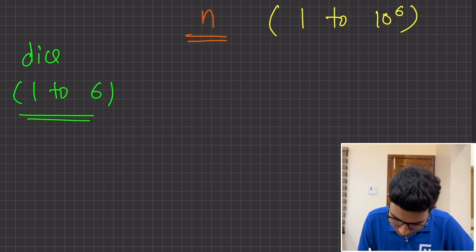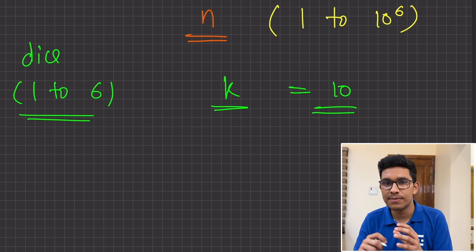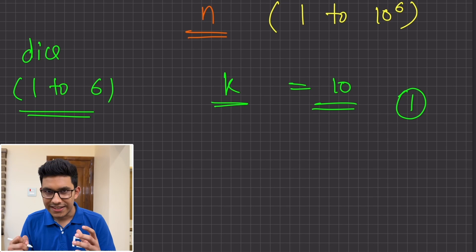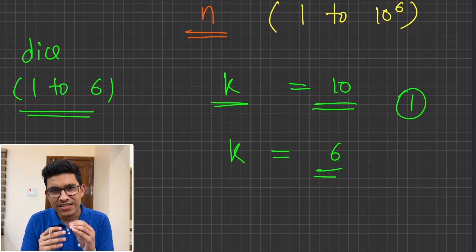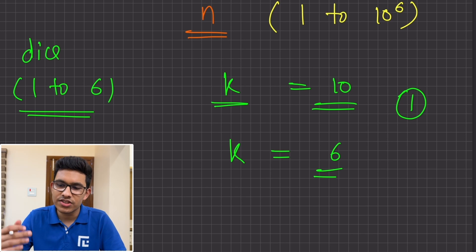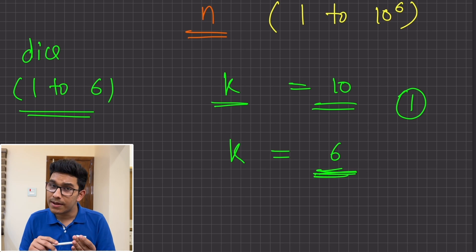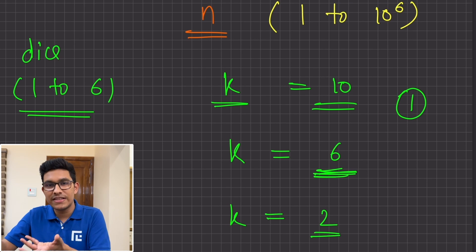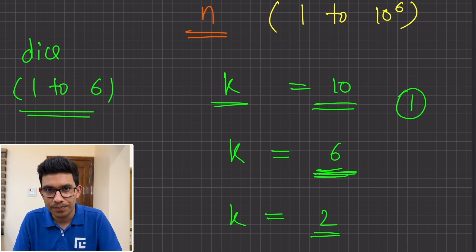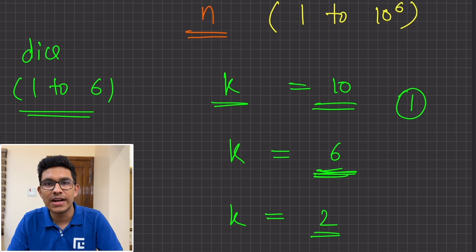Let's suppose I ask you to construct a sum of k. Let's say this value of k is equal to 10 — you want to find out in how many ways can you get a sum of 10. Another problem: you want to construct a sum of k which is equal to 6. Clearly, constructing a sum of 6 is going to be much easier than constructing a sum of 10. And similarly, if k was equal to 2, it would be even more easier. So the higher the value of k, the more difficult it is to solve.